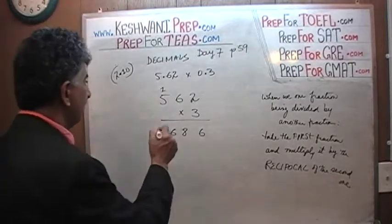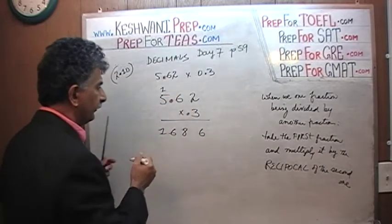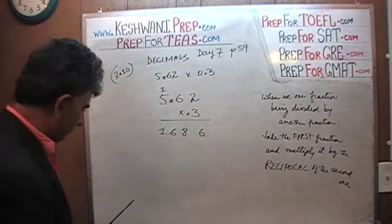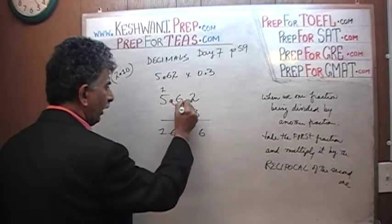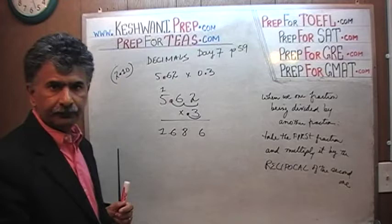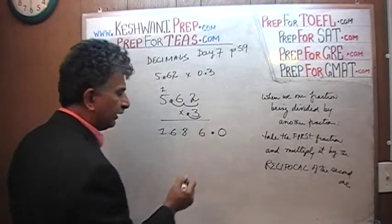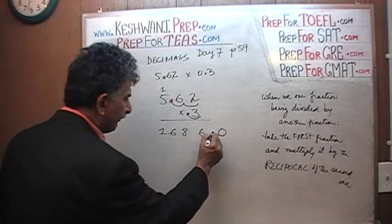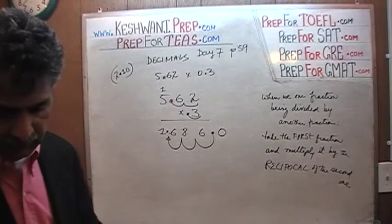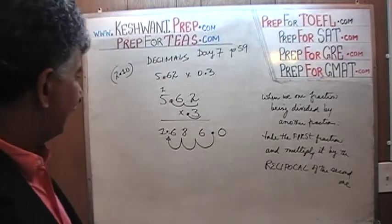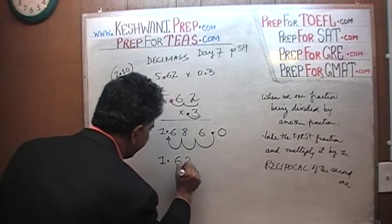So now we go and insert our decimal point where it belongs. 5.62 has 2 decimal places, and 0.3 has 1 decimal place — there are 3 decimal places total. The decimal is currently at the end; just move it 3 places to the left: 1, 2, and 3. Voilà — the answer is 1.686.